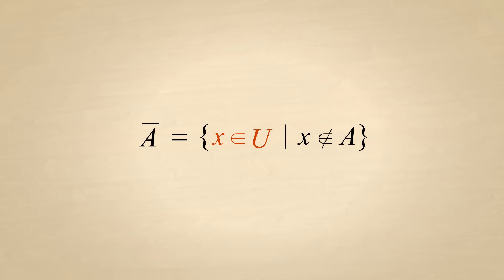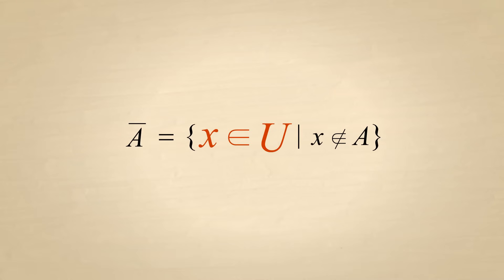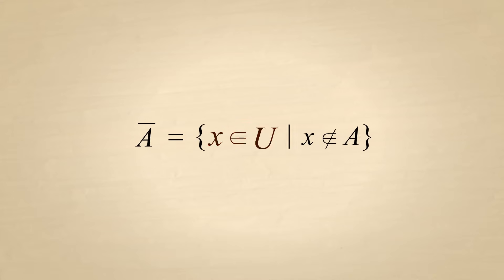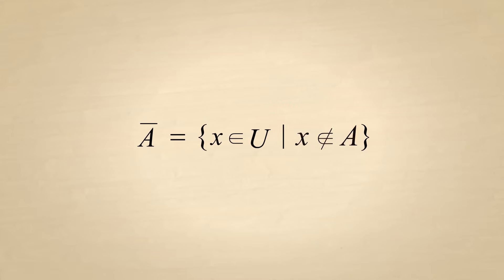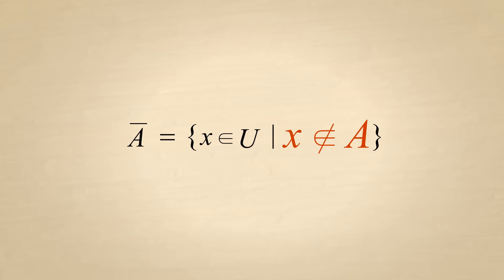This is read as: the complement of set A is the set of all elements X which are members of the universal set U, such that X is not a member of A.